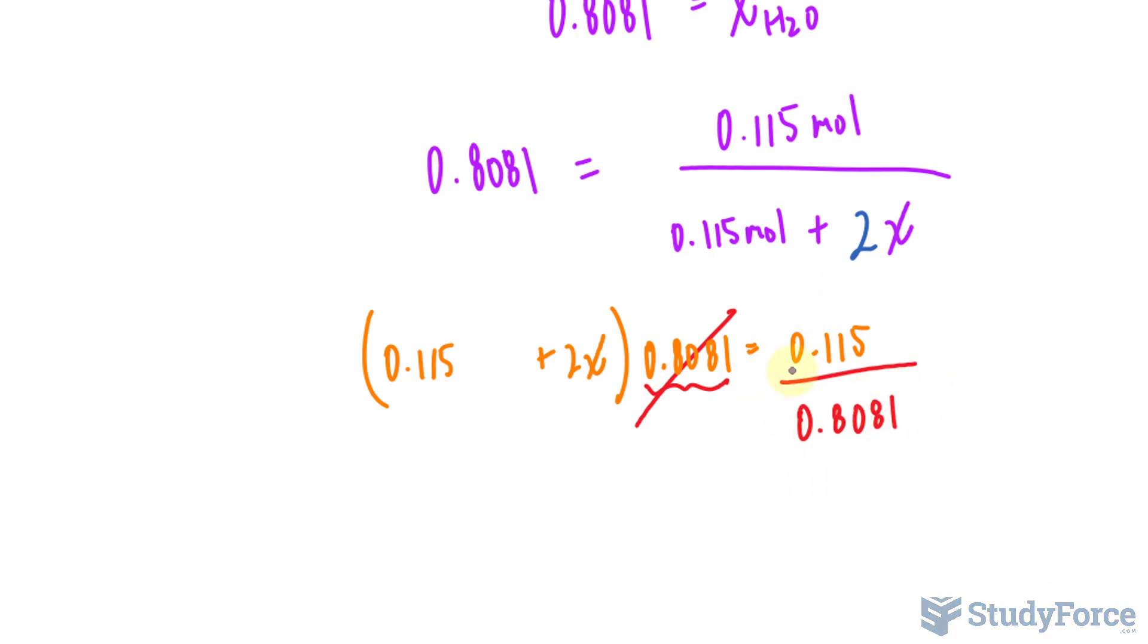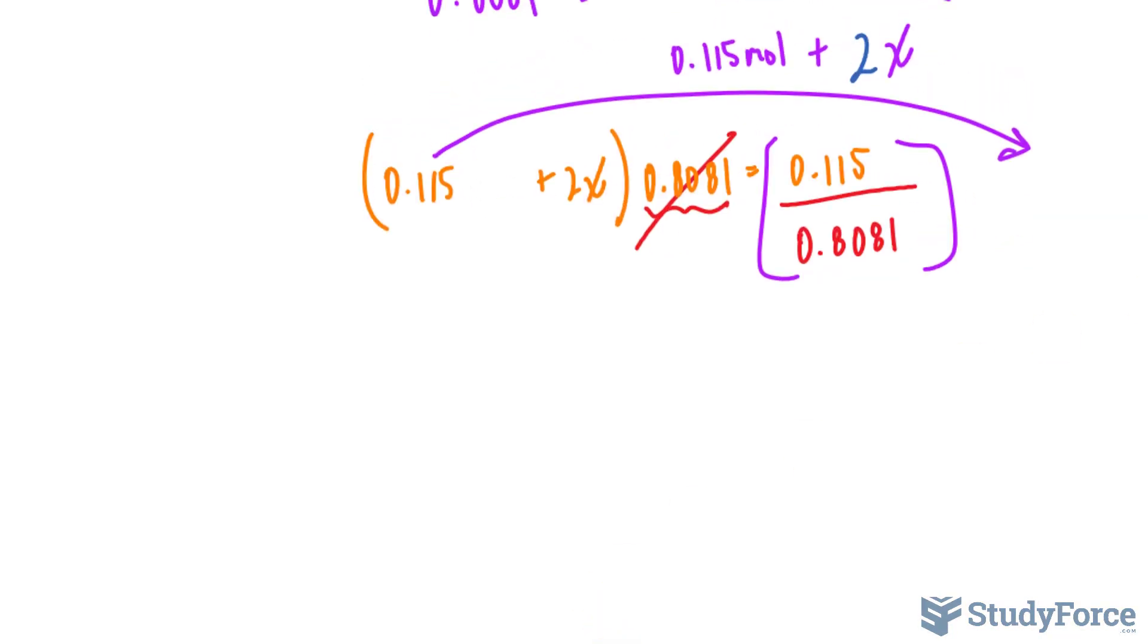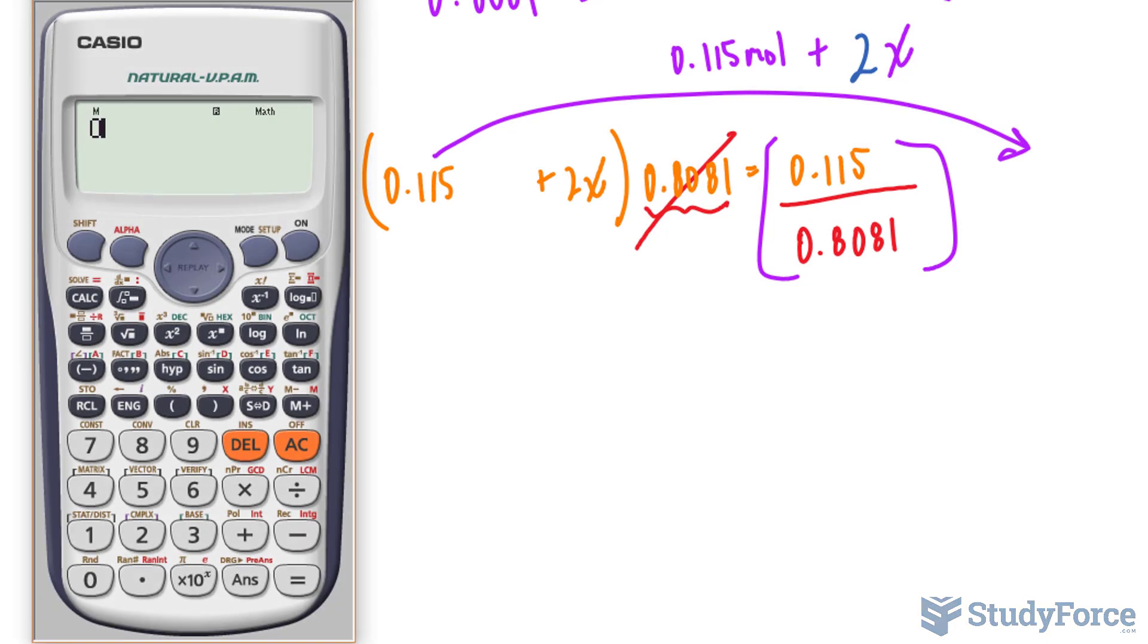And then, after finding the answer to this, I will bring this over, transpose it to the other side, so let's use our calculator. First, 0.115 divided by 0.8081, that's the answer, and then moving 0.115 over, that negates it, so makes it negative, we get that.